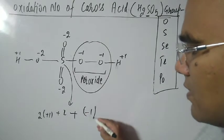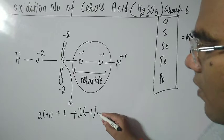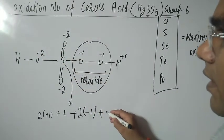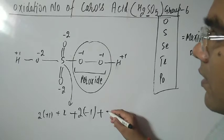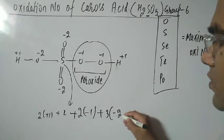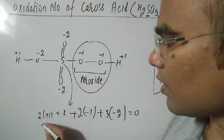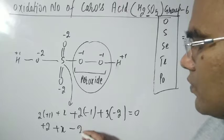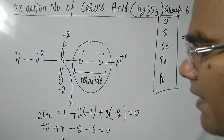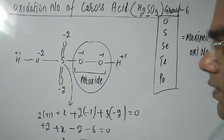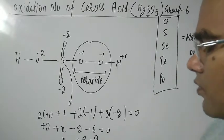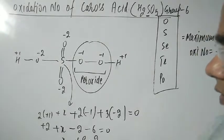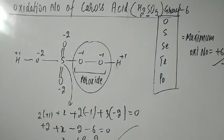There are 3 oxygens in the minus 2 state. Setting up the equation: plus 2 (from 2 hydrogens) plus X plus 2×(minus 1) plus 3×(minus 2) equals 0. This gives plus 2 plus X minus 2 minus 6 equals 0, so X equals plus 6.